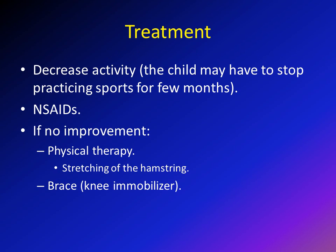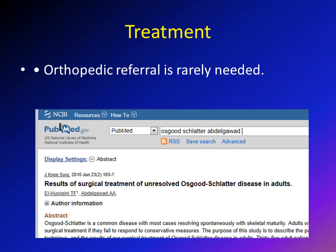To summarize the treatment of Osgood-Schlatter: first, decrease activity; second, try non-steroidal anti-inflammatories; if those two measures don't help, add physical therapy for hamstring stretching and a knee immobilizer to decrease range of motion. Orthopedic referral is rarely needed — most children improve on their own, especially when they reach skeletal maturity. If pain persists, orthopedic referral can be done, but surgery is very rarely needed.